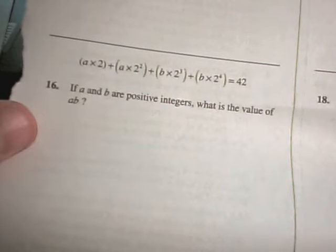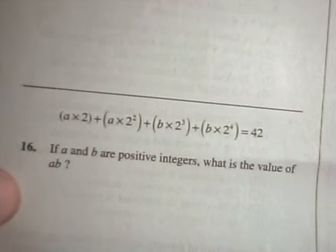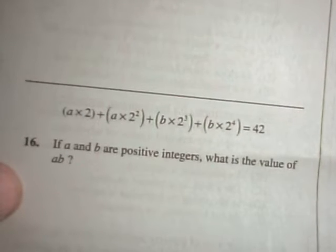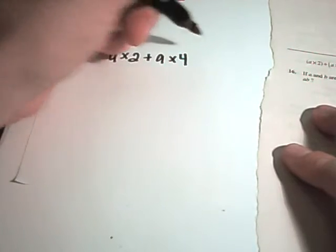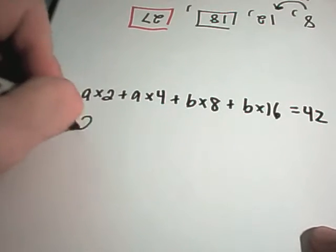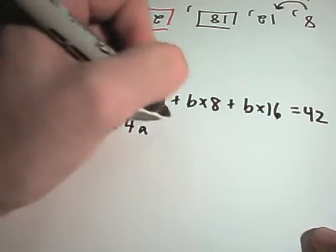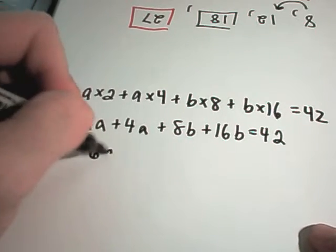Problem 16, it says if a and b are positive integers, what is the value of a times b? Okay, so they give us this expression: a times 2 plus a times 2 squared plus b times 2 cubed plus b times 2 to the 4th equals 42. a and b are positive integers. So, I'm going to simplify this down. So, we have a times 2 plus a times 4, if I multiply it out, plus b times 8 plus b times 16. That equals 42. I'm going to write it a little different. So, we've got 2a plus 4a plus 8b plus 16b equals 42. I can always combine these things. 6a plus 24b equals 42.